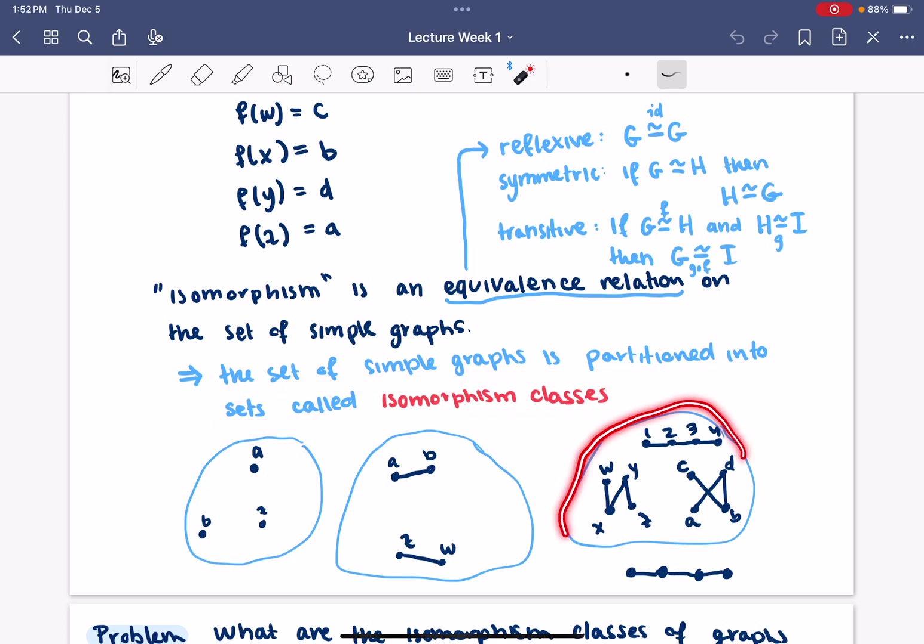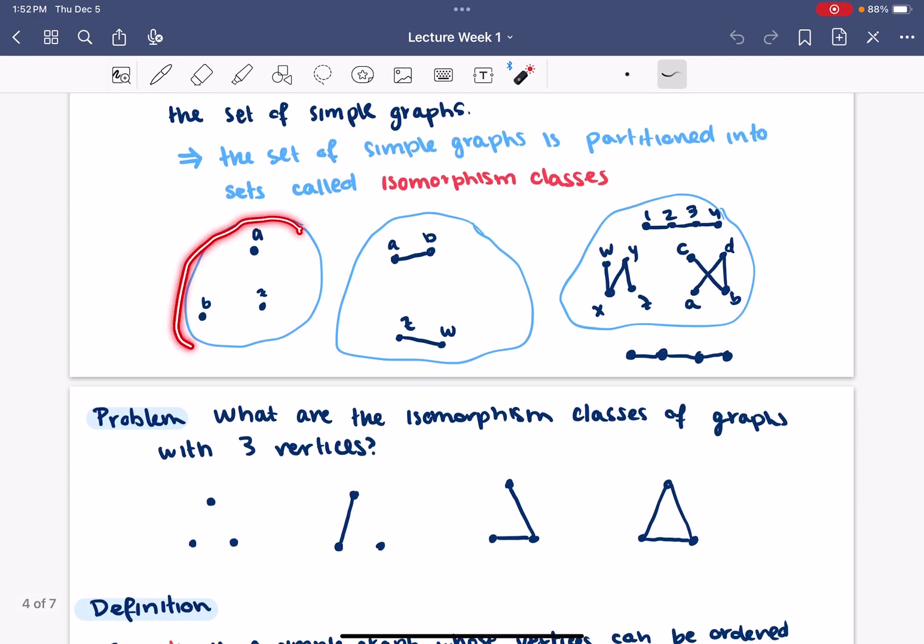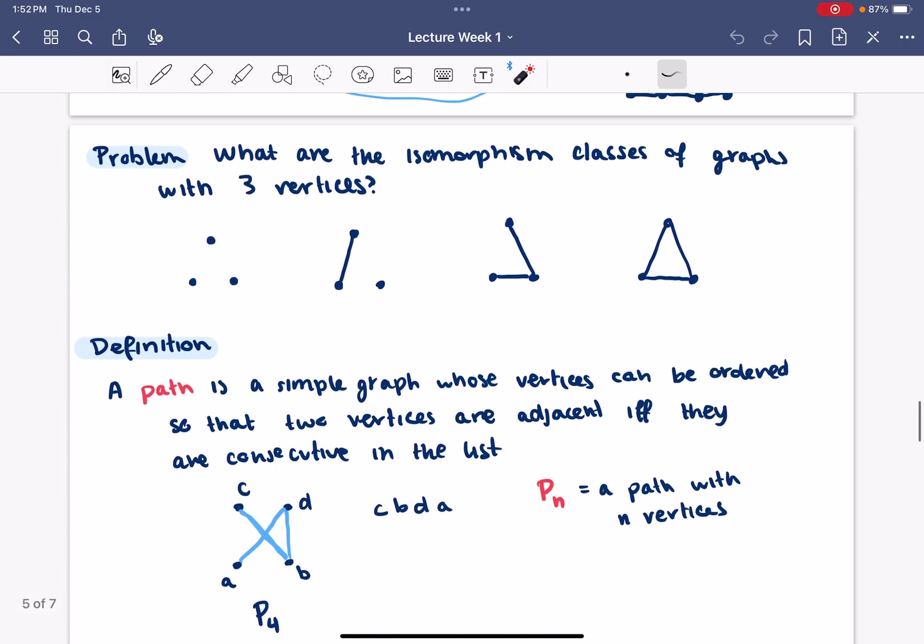For example, here's a class of graphs that are all isomorphic to one another. This was meant to represent graphs on one vertex that are isomorphic to one another. This is the isomorphism class consisting of graphs with a single edge and so on. Then you can ask questions like, what are the isomorphism classes of graphs with three vertices? And then we write them down as follows.